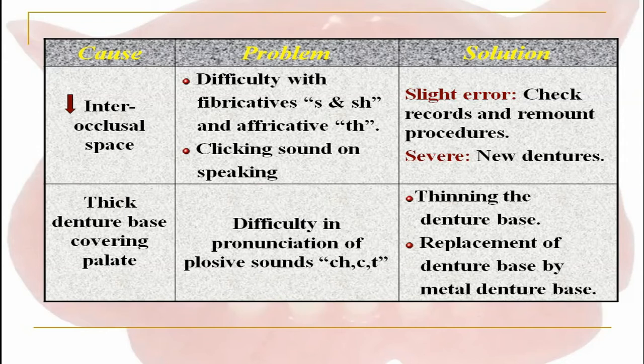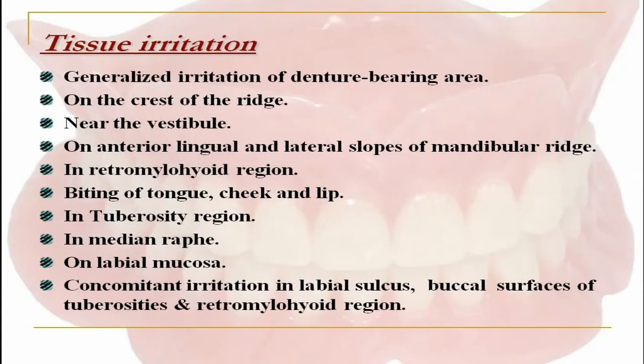If the problem is very severe, we have to go for new denture fabrication. The next cause could be a thick denture base covering the palate. The problem is difficulty in pronunciation of plosive sounds like 'ch', 'c', 't', and similar sounds. The solution is thinning the denture base in that particular palatal area and the replacement of the denture base by metal denture bases.